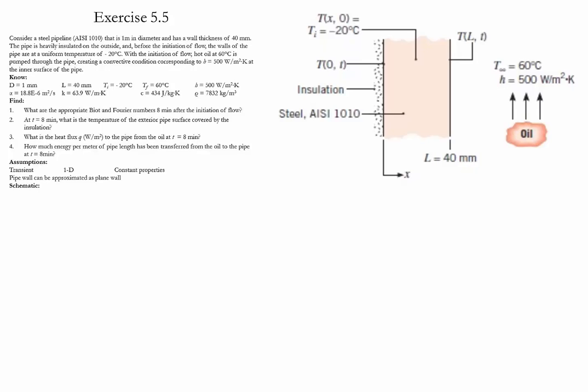Then a hot oil at 60 Celsius is pumped through the pipe with a given convection coefficient. We need to find the values of the Biot number and Fourier number after 8 minutes after the initiation of the flow.